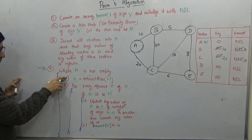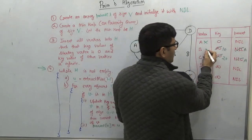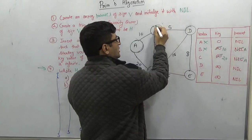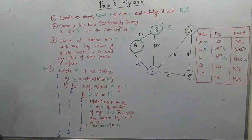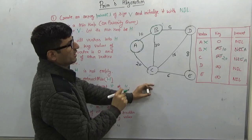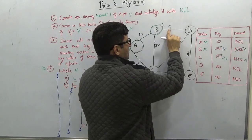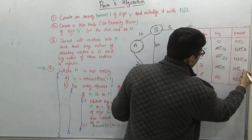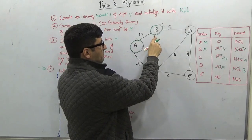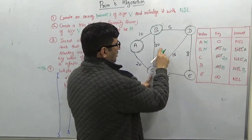We repeat the loop and extract the minimum again. Out of the remaining vertices, B has the minimum key value of 10, so we extract B from the heap. B is now included in the MST set. We go through all adjacent vertices of B: C and D. For D, we compare its current key value of infinite with edge weight 5 — 5 is less, so we update and make parent of D equal to B. For C, we compare its current key value of 20 with edge weight 30 — 20 is less, so we do not update.